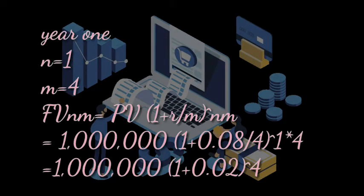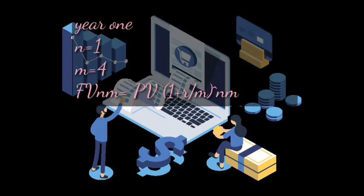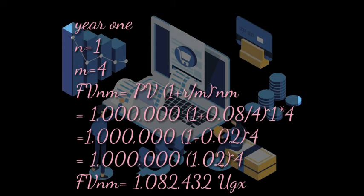We first divide 0.08 by four to get 0.02. So it becomes one million into brackets one plus 0.02, to the power of four. Using a calculator, our final answer is one million eighty-two thousand four hundred and thirty-two Uganda shillings — that will be the money on the account at the end of year one.